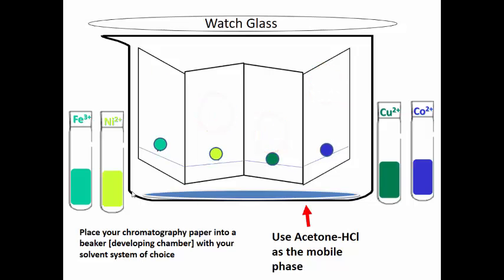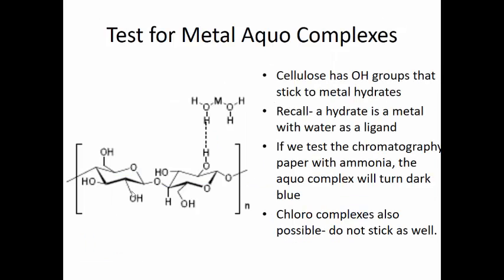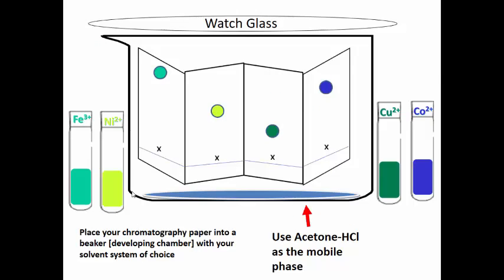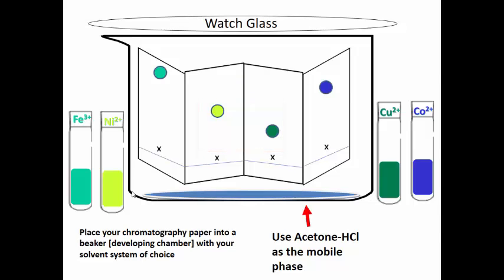Let's look at those again. The iron is flying up the chromatography paper, so is the cobalt, but the copper and nickel are moving a lot slower. The ones that move really slowly are really sticking to the chromatography paper. The ones that move quickly are not sticking very well.